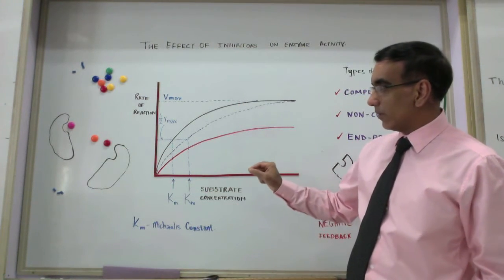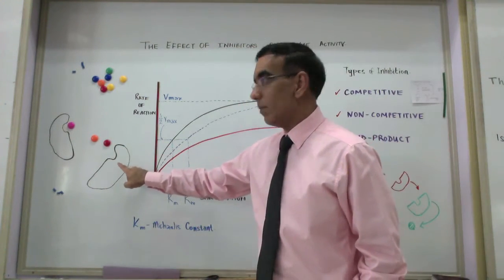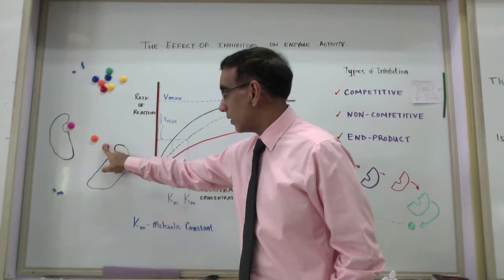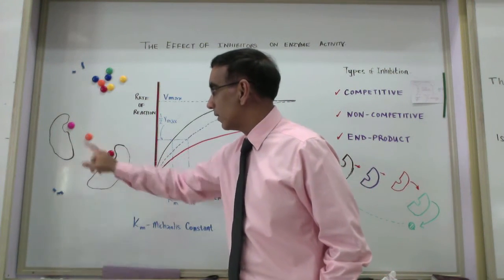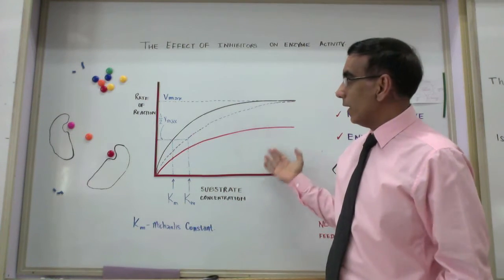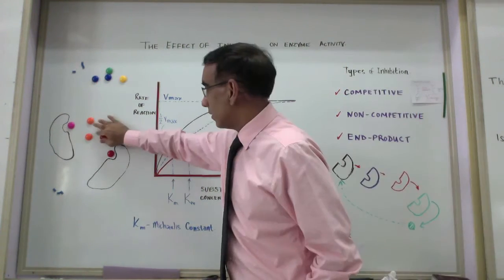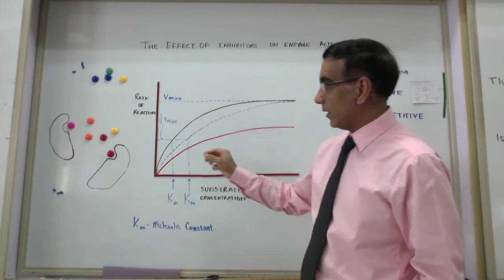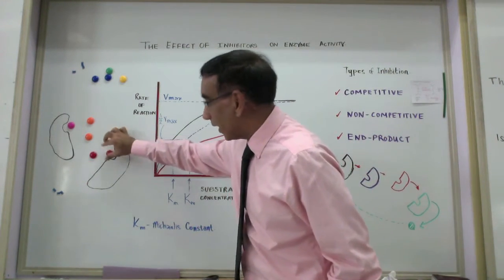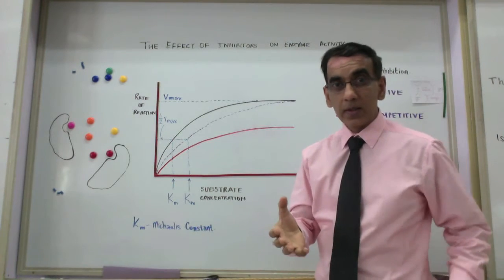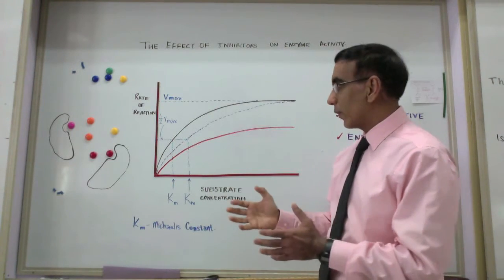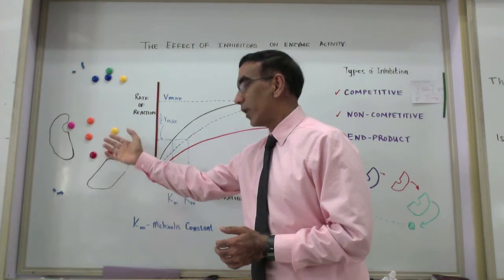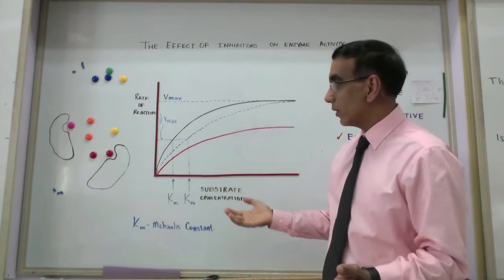...then the probability of an enzyme with its active site coming into contact with a substrate is fairly low. But when you increase the amount of substrate, or the concentration of substrate, the probability of enzymes and substrates colliding with the right orientations increases and therefore the likelihood of having a conversion from reactants into products increases.